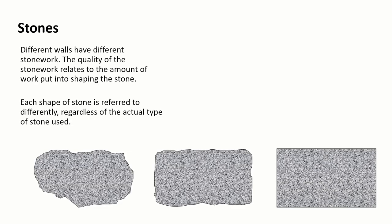The stones that we use within construction have different qualities. The quality of a stonework relates to the amount of work put into shaping the stone. The mason would be able to take a rough stone and shape it into different shapes depending on how fine the building needed to be. We would name each of these stones depending on the shape rather than the actual type of material being used.